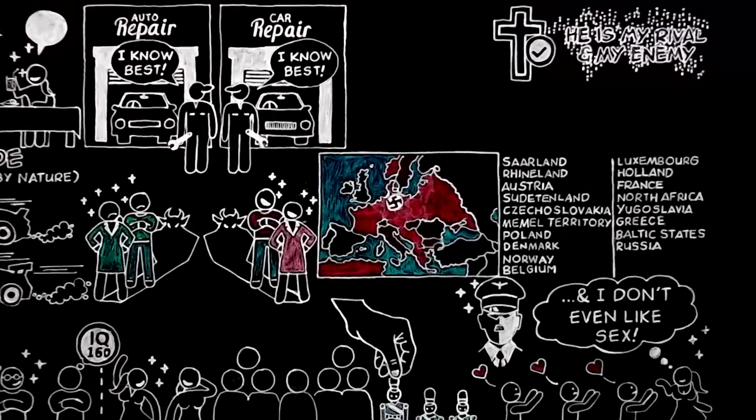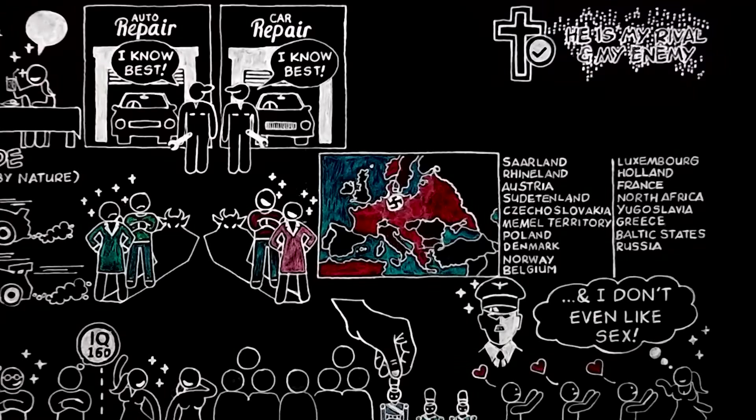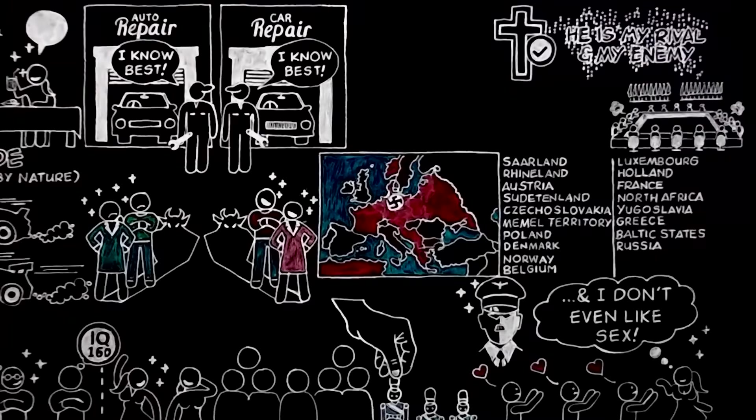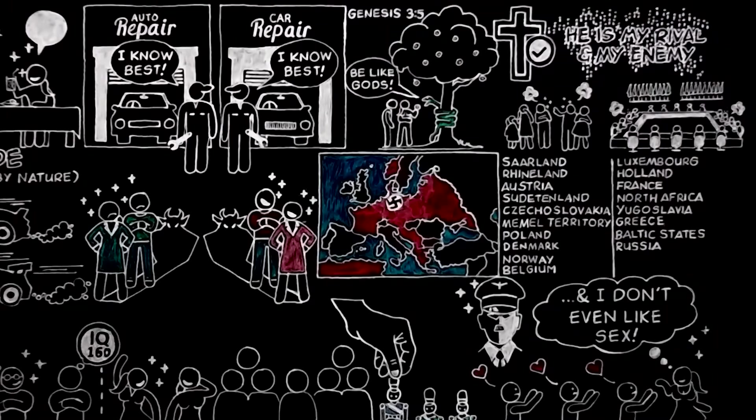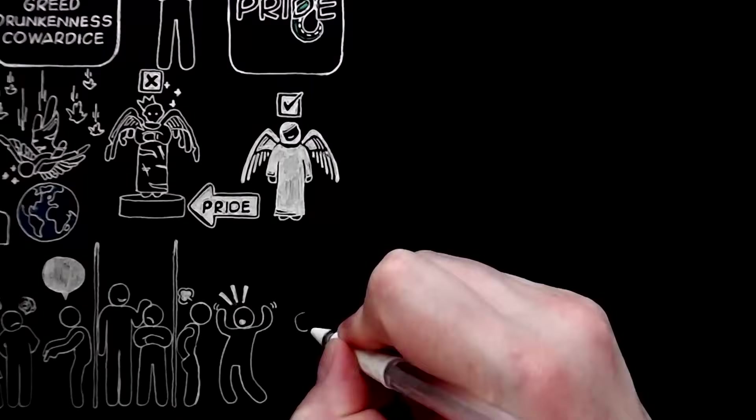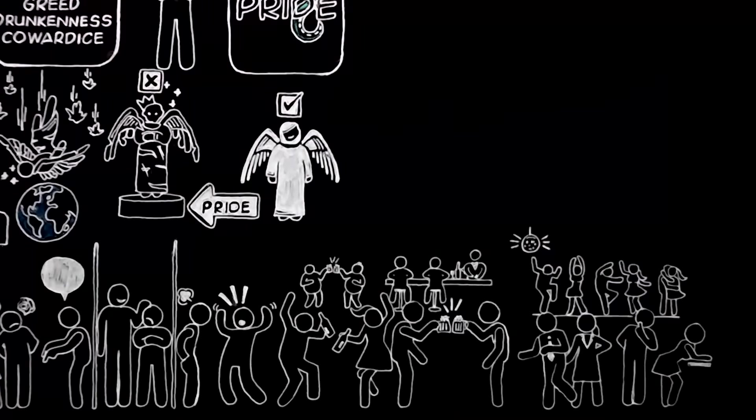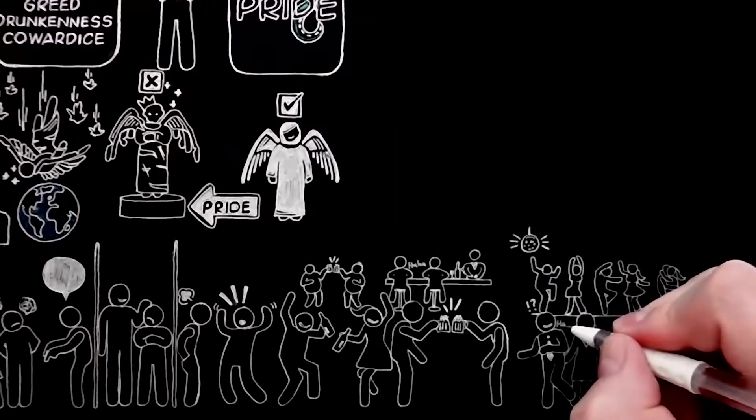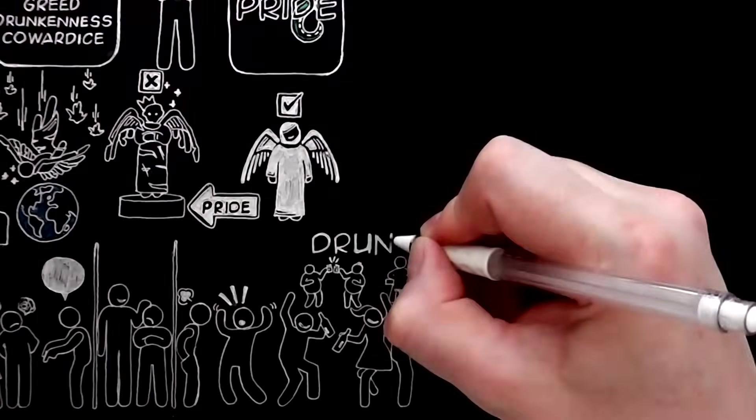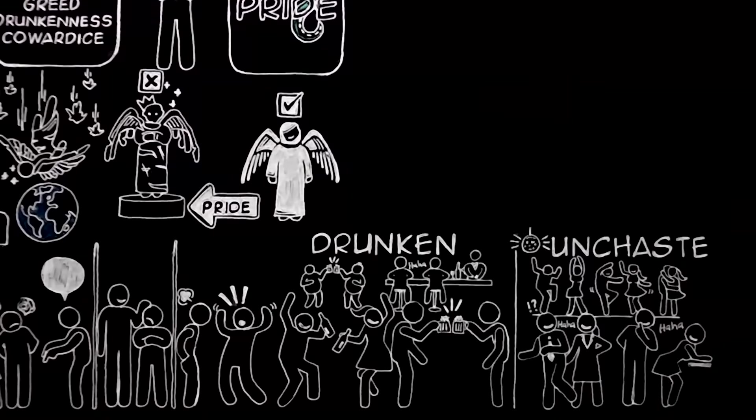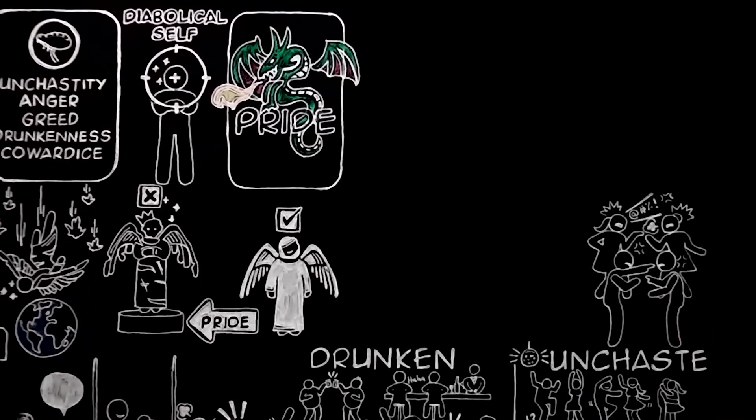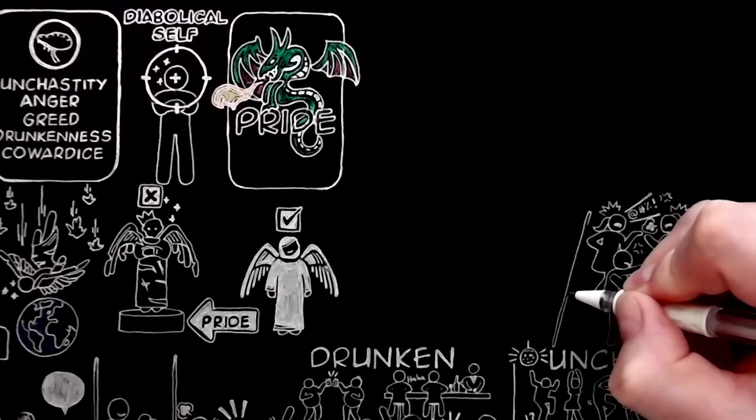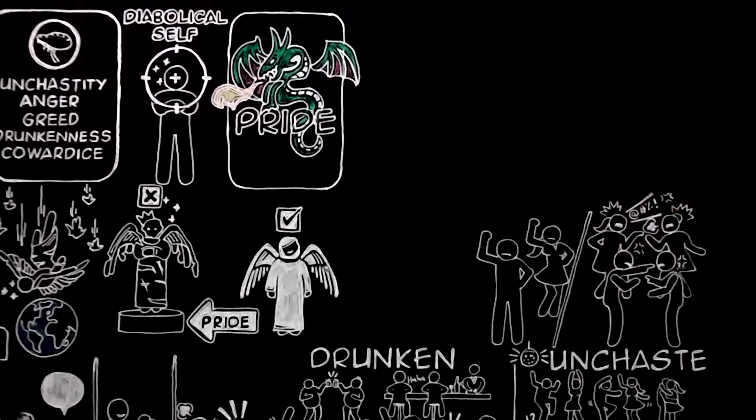The Christians are right. It is pride which has been the chief cause of misery in every nation and every family since the world began. Other vices may sometimes bring people together. You may find good fellowship and jokes and friendliness among drunken people or unchaste people. But pride always means enmity. It is enmity. And not only enmity between man and man, but enmity to God.